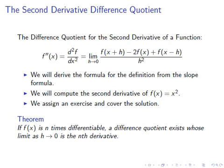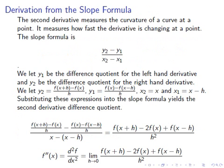We will derive this formula from the slope formula, where we will compute the second derivative of f(x) = x squared, assign an exercise, and cover the solution. It's true that if f(x) is n times differentiable, a difference quotient exists whose limit as h approaches 0 is the nth derivative. The second derivative measures the curvature of a curve at a point — it measures how fast the derivative is changing at a point.